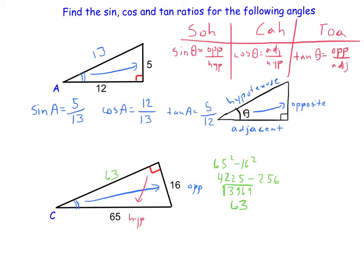Sine ratio. Sine of C: sine is opposite. The opposite is the 16, that's what it's opening up to, over the hypotenuse of 65, not the 63 down there. And that does not reduce. 65, remember, is 13 times 5, and neither of those are factors of 16.